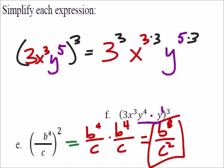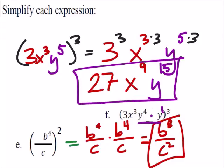So, the final answer, 3 to the power of 3 is 27. And then I've got X to the power of 3 times 3, which is 9. And finally, Y to the power of 5 times 3 is 15. So that would be the answer for F right there.